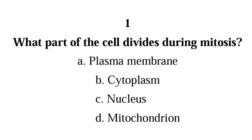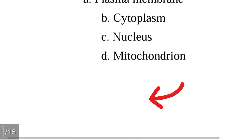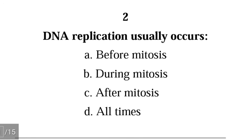Question 1: What part of the cell divides during mitosis? A) plasma membrane, B) cytoplasm, C) nucleus, D) mitochondria. The correct answer is C) nucleus. Mitosis involves the division of the nucleus.